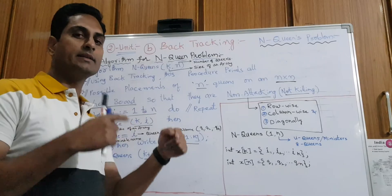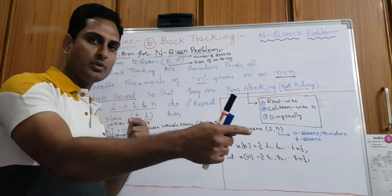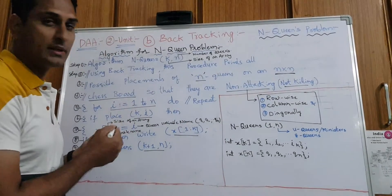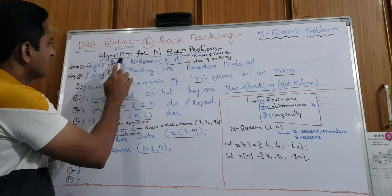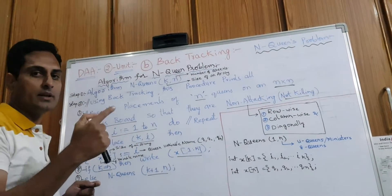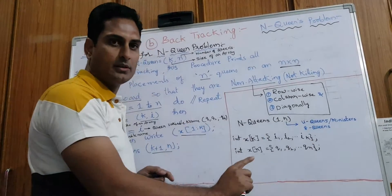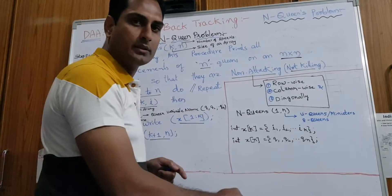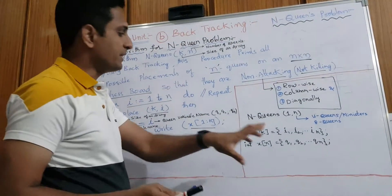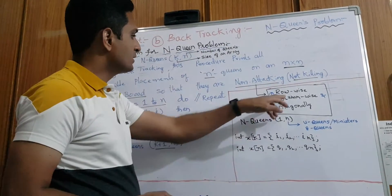We will go back while designing the algorithm — if we don't get the output, we'll go back and set it again. That algorithm goes something like this: algorithm for N-Queens problem. N-Queens is a generic one — you can use four queens, eight queens, or sixteen queens.